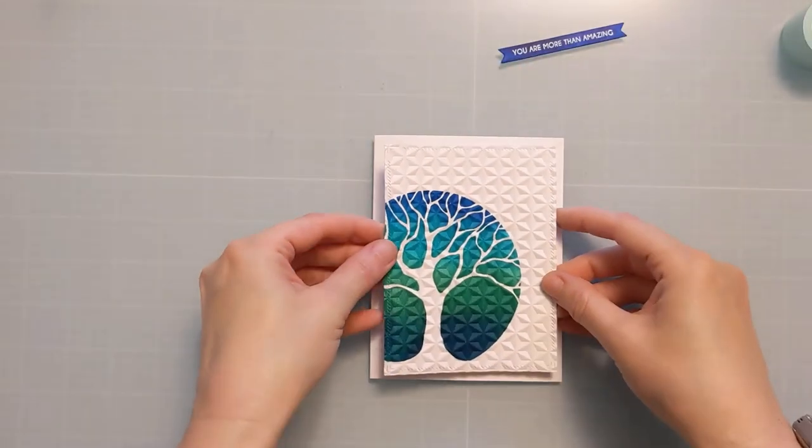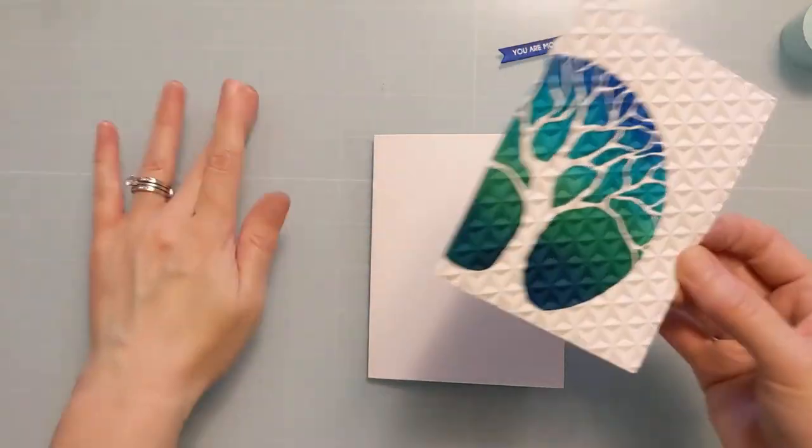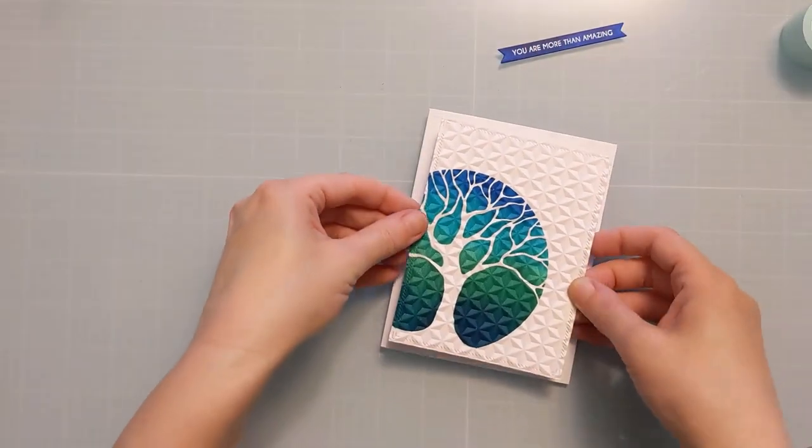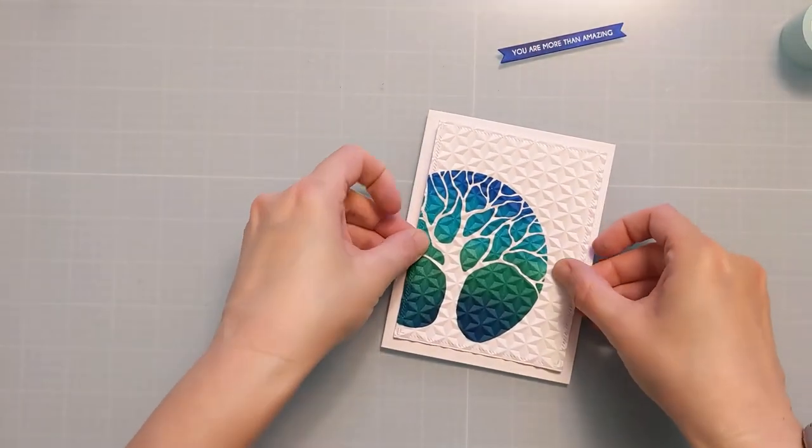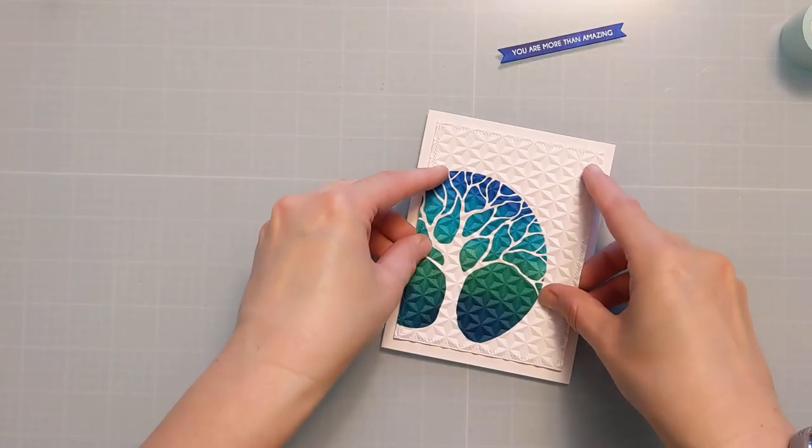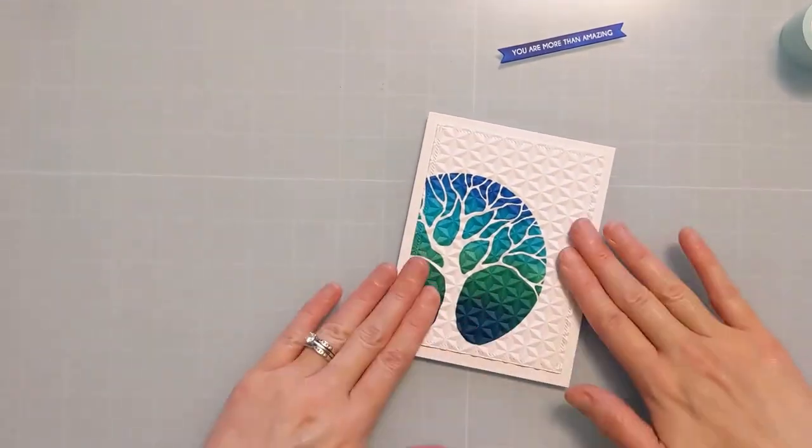So I'm just using some tape runner, and I'm going to put this down right on my card base. This is 120 pound accent opaque. That's the same thing that I used for the card panel. And you can see with that die cutting, it gives it kind of a nice white border.